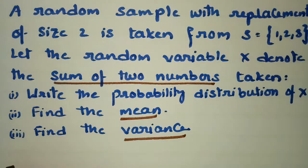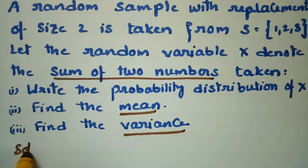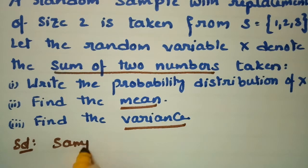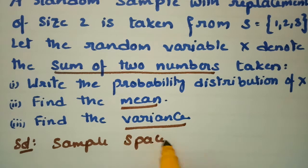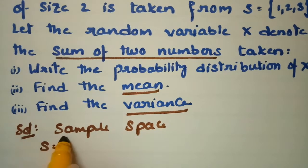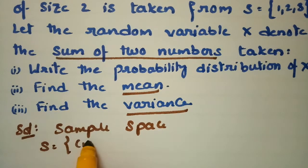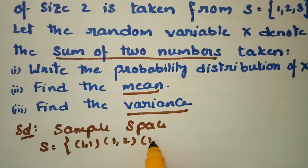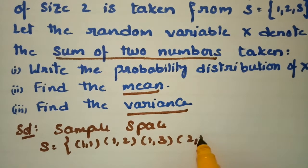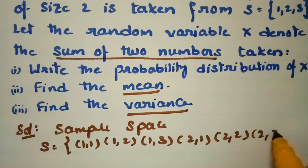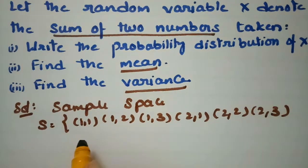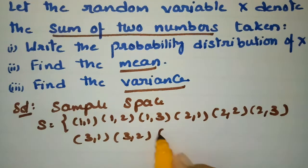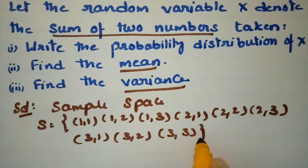The set s is given as {1, 2, 3}. The sample space s consists of all ordered pairs: (1,1), (1,2), (1,3), (2,1), (2,2), (2,3), (3,1), (3,2), and (3,3). These are all the possible outcomes.